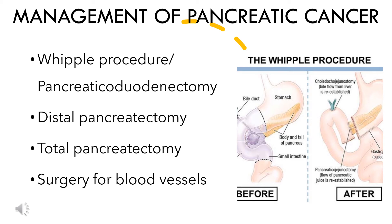Distal pancreatectomy is done to remove tumors in the pancreatic body and tail, and in some cases the spleen is also removed. In total pancreatectomy, the entire pancreas is removed and lifelong insulin and enzyme replacement is necessary after this procedure. The fourth procedure removes and reconstructs affected blood vessels, done for patients not eligible for the Whipple procedure or other pancreatic surgeries.